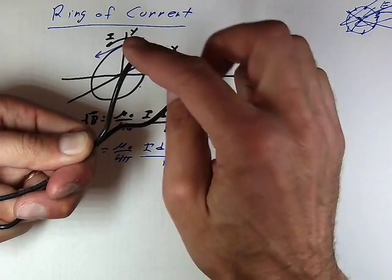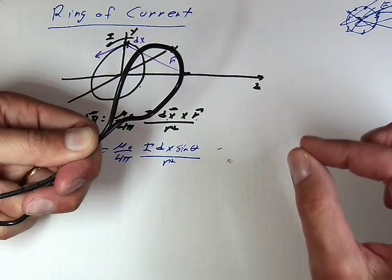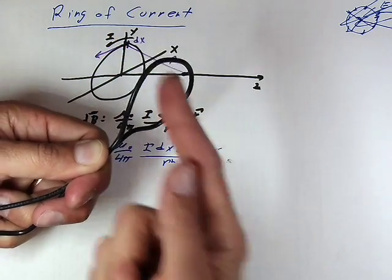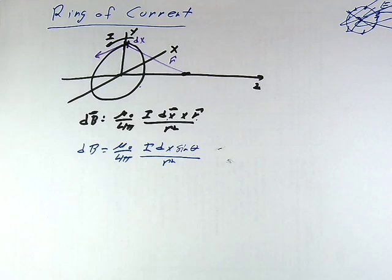And my observation point, remember, is going to be like way down here along the axis of the ring. And so the dx is up here, and my observation point, my r hat sort of goes down this way to the observation point. So if you look very carefully in here.